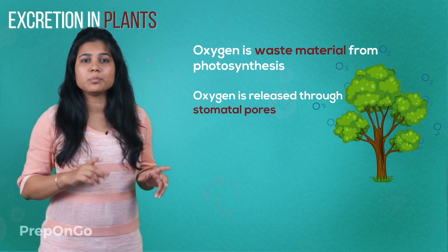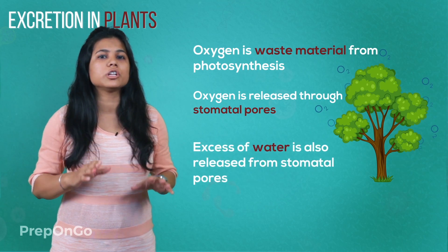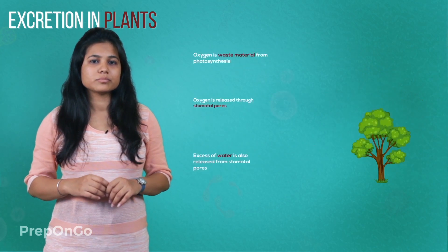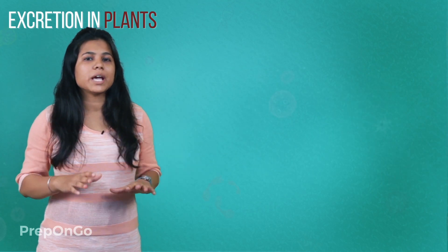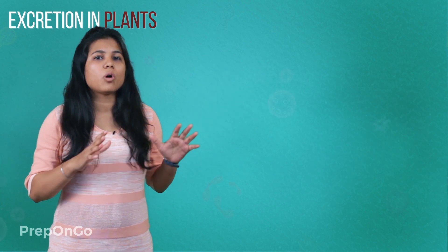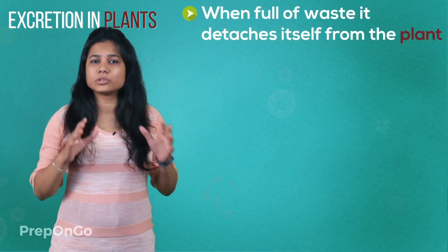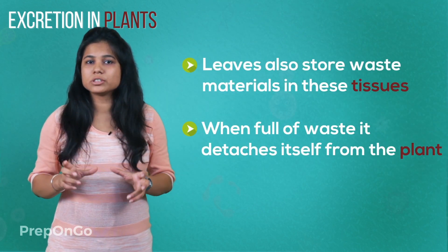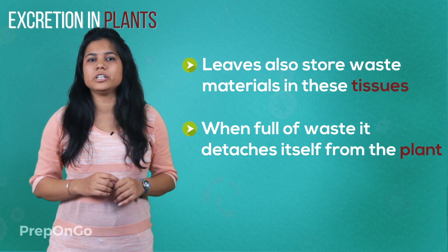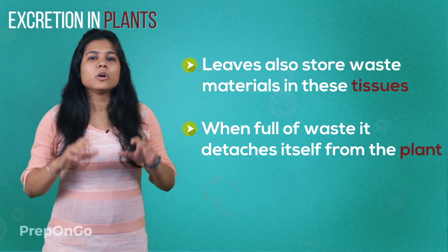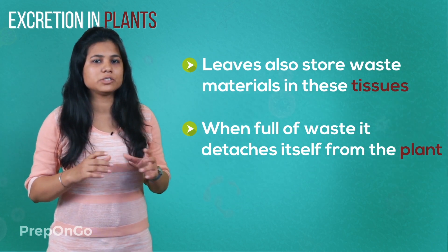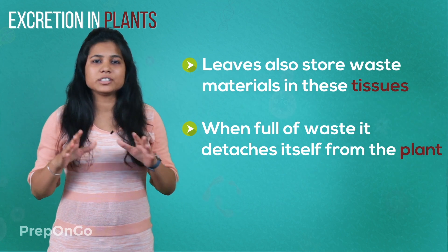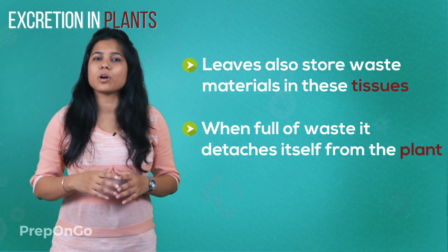These stomatal pores also remove excess water from the plants. Sometimes, the plant also stores its waste materials into the cellular vacuoles of the permanent tissues. When the leaf is full of these waste materials, it detaches itself from the plant.